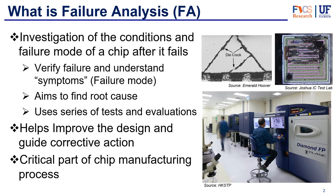The next step is to find why it went wrong. This is probably the most important part of the process, which is finding the root cause. You find this root cause with a series of tests and evaluations. And thanks to finding this root cause, you can then guide corrective action — go back to the design board and try to make a better chip that will resist whatever went wrong in the prototype.